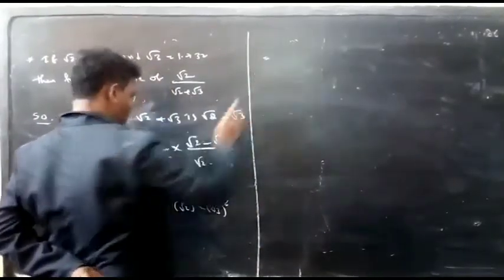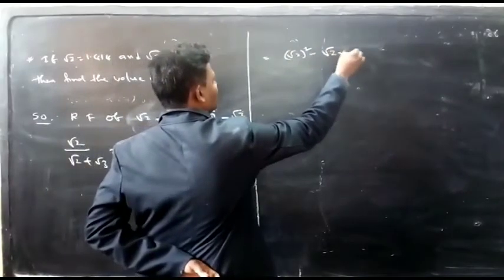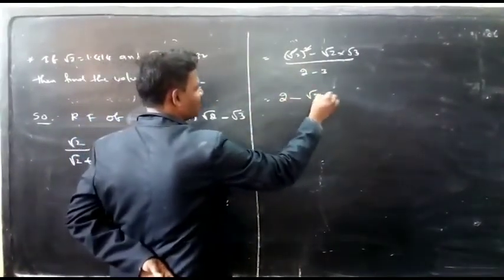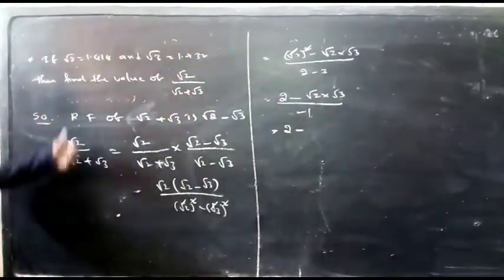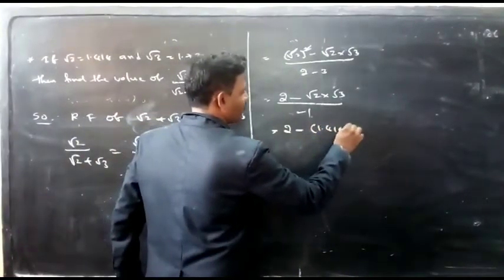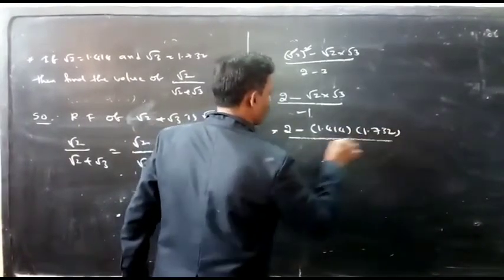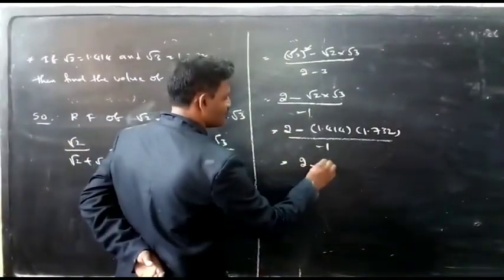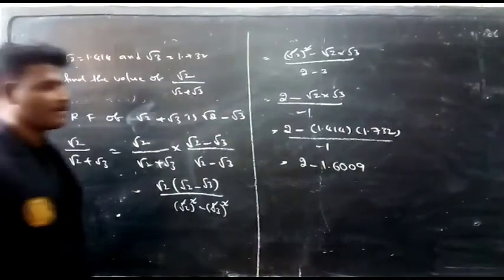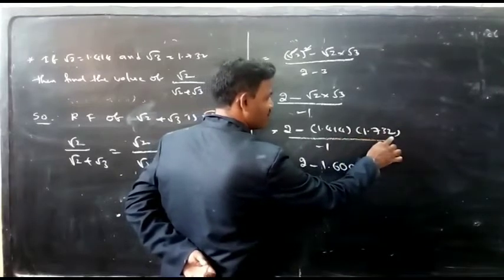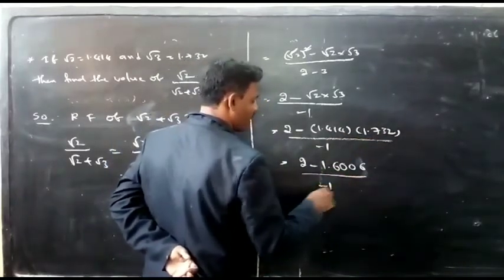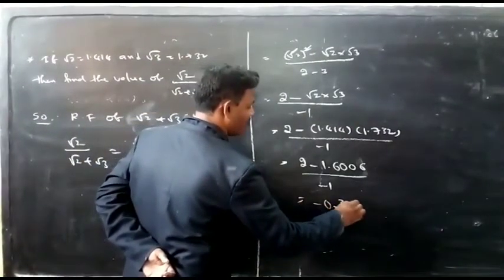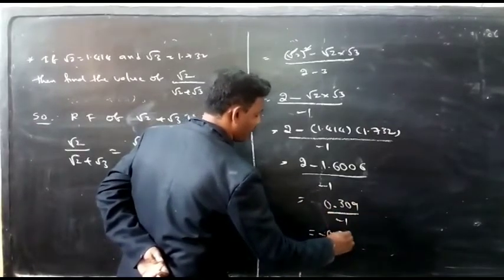The numerator becomes √2 × √2 − √2 × √3 = (√2)² − √6 = 2 − √6. The denominator is 2 − 3 = −1. So we get (2 − √2 × √3) / −1. Substituting √2 = 1.414 and √3 = 1.732, multiply: 1.414 × 1.732 = 1.6006. Then 2 − 1.6006 = 0.3994 divided by −1, giving approximately −0.309.